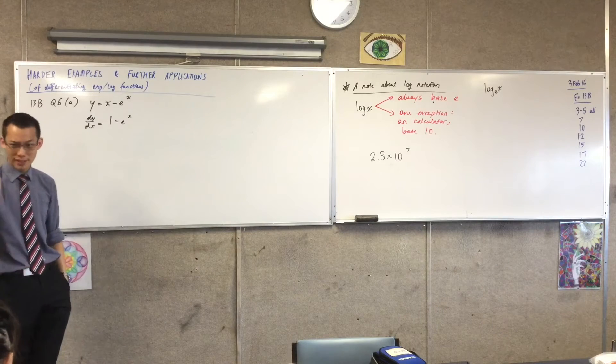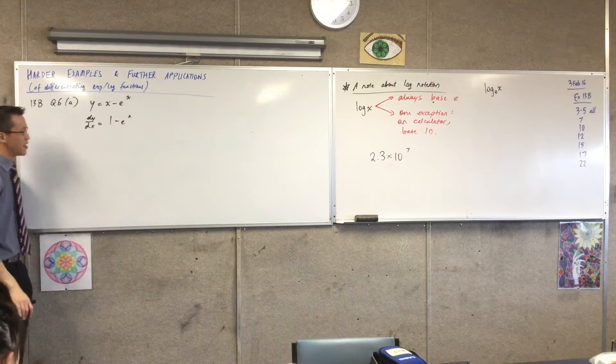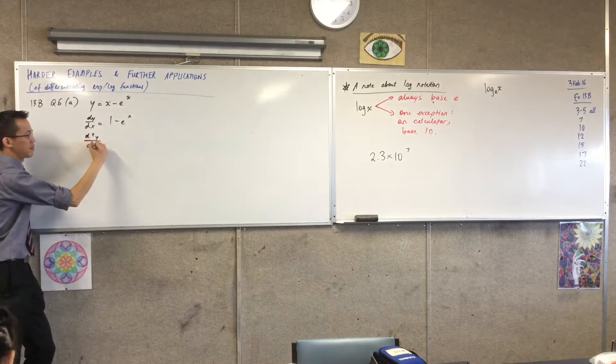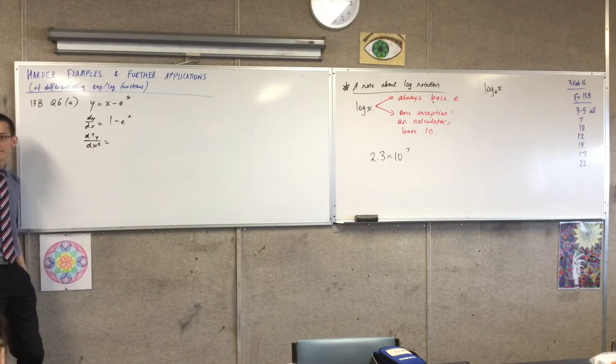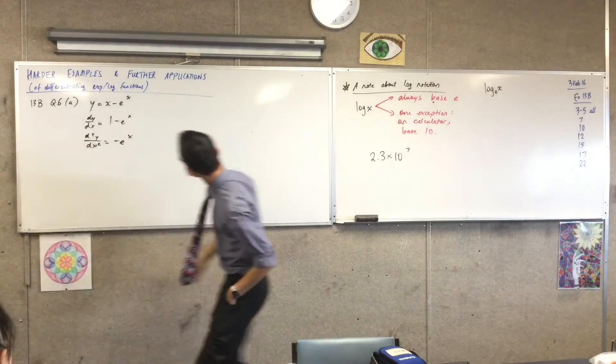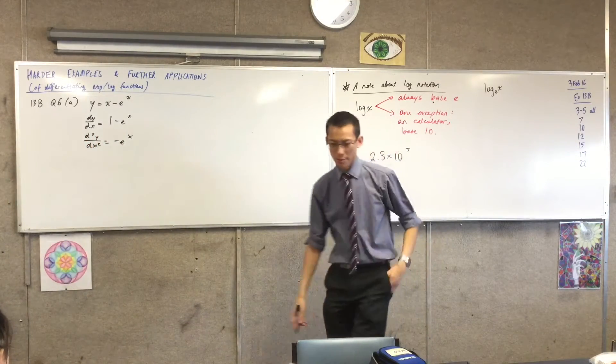We know what happens to the x, just like a regular power comes down. e to the x just stays completely unfazed. Differentiation happens. Differentiate one more time. And of course what happens to the 1? It gets differentiated away and you just get left with this guy. So far so good.